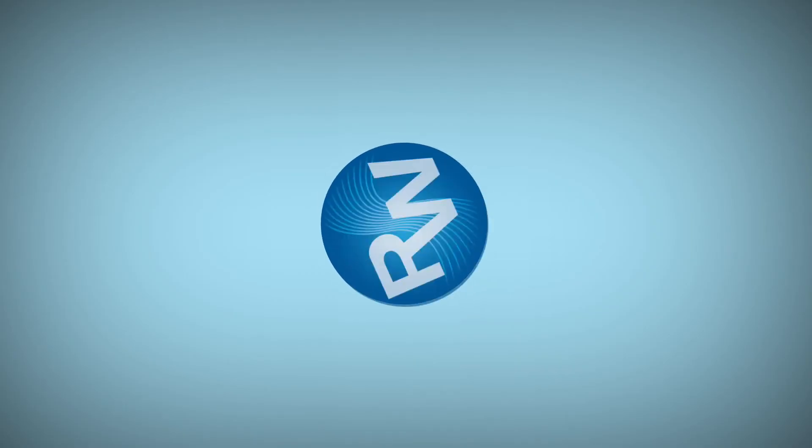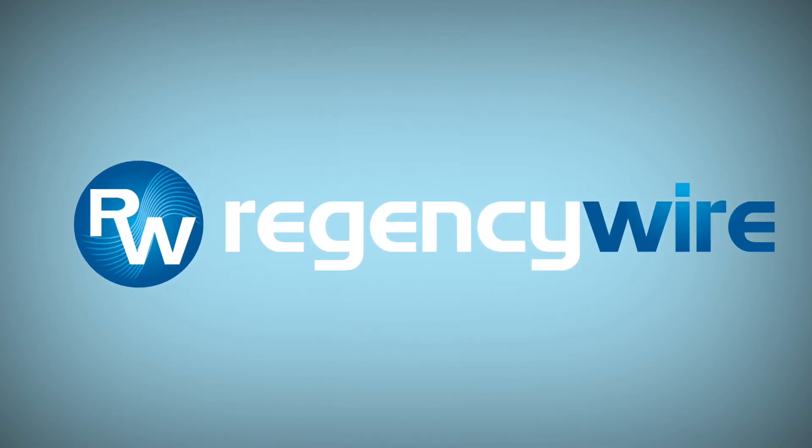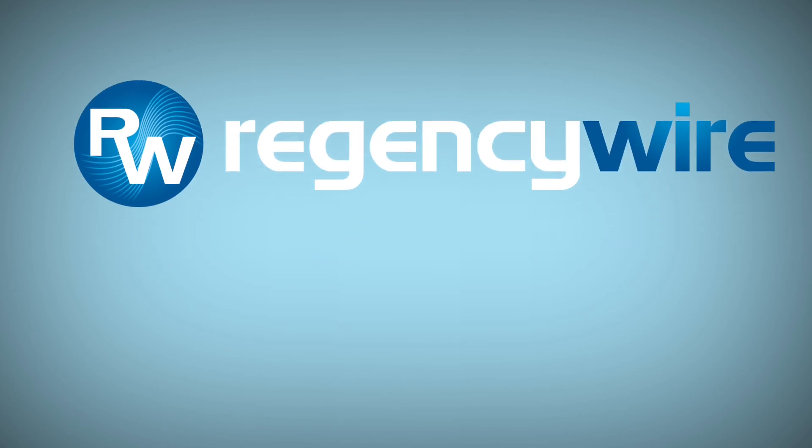For over 30 years, irrigation professionals have relied on Regency wire and cable to provide high-quality electrical products and superior customer support. Regency makes a complete line of supplies for decoder-based systems, including manufacturer-approved cable, splices, and system grounding supplies. Discover the Regency Advantage at RegencyWire.com.